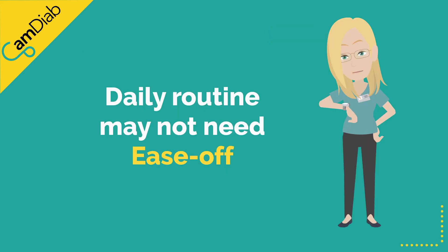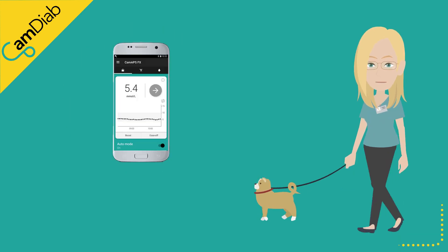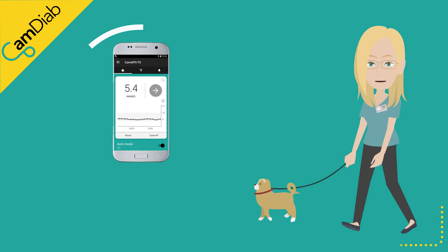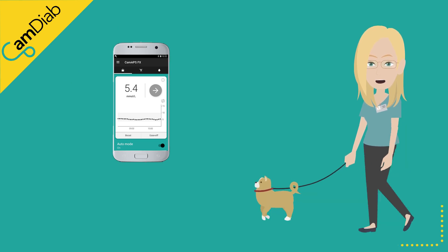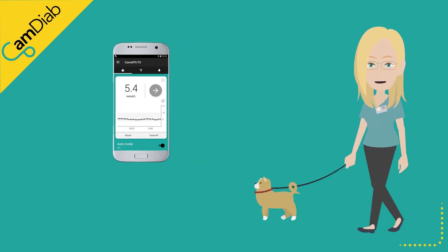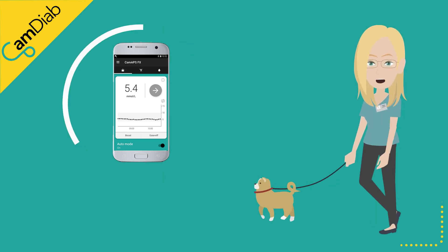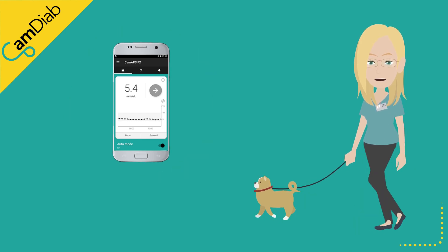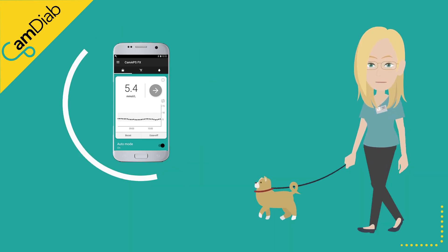An activity that is part of someone's daily routine may not need Ease-Off. For example, if someone takes their dog for a short walk every morning before breakfast, the algorithm's learning will automatically adjust the insulin delivery for this regular activity.